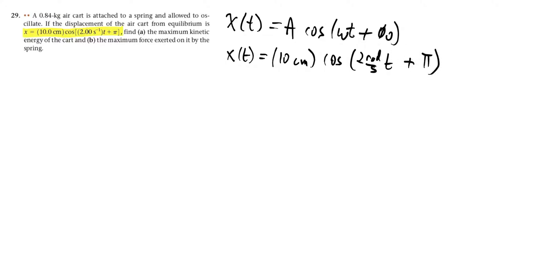The key to doing all of these problems is to make associations between the generic form of the equation and the numbers that you see in front of terms in the given equation. We can look at the number in front of the trig term, and since it's position, we make the association between this 10 centimeters and the amplitude.